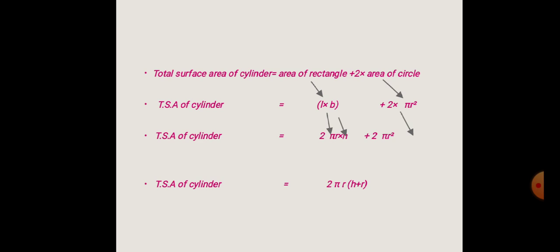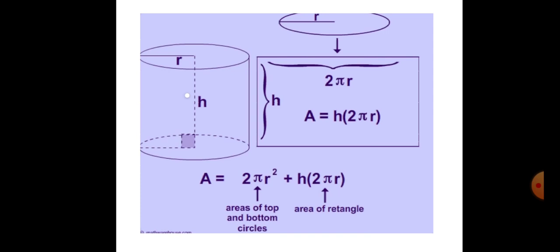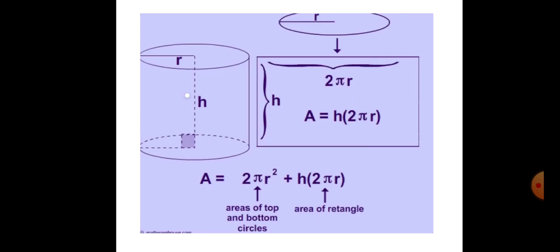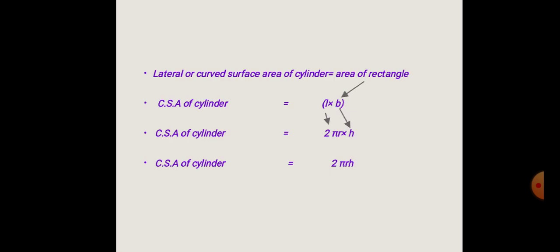For the lateral or curved surface area of the cylinder, we exclude the top and bottom. When we cut and open the cylinder, it becomes a rectangle. The area of that rectangle is L × B, where length becomes the circumference of the circle, 2πR, and breadth becomes the height H. Therefore, the curved surface area of a cylinder is 2πRH.